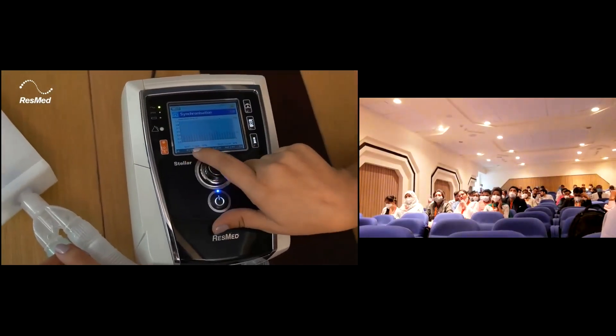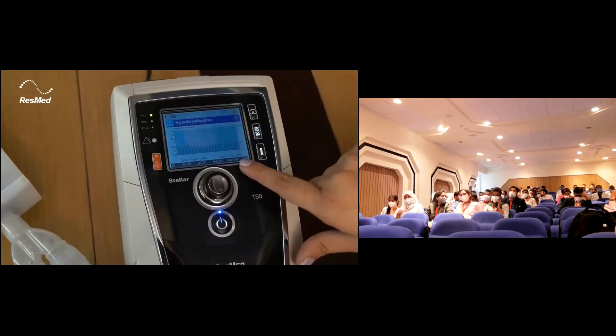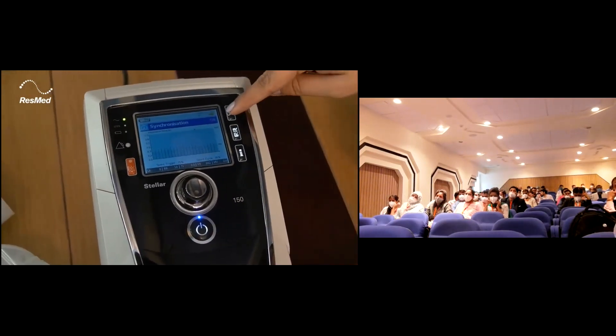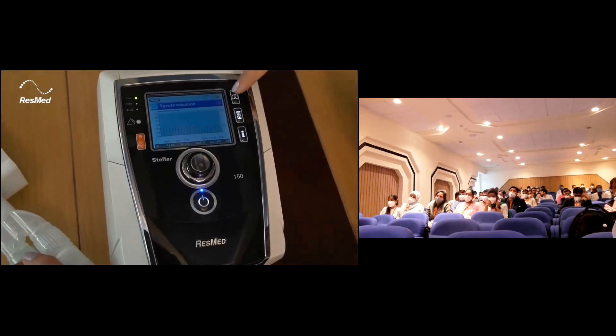The yellow color triangle basically means the breath was ended by the device. There was no spontaneous triggering in this breath and no spontaneous cycling in this breath. You can see the spontaneous triggering percentage and spontaneous cycle percentage, which are important parameters for clinical decisions.